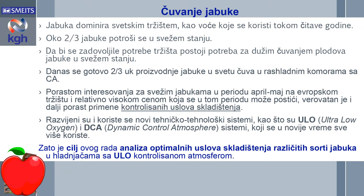U svetu, kontrolisana atmosfera najviše se koristi za čuvanje jabuka, i to je tema ovog rada. Jabuka dominira svetskim tržištem kao voće koje se koristi tokom čitave godine. Oko dve trećine jabuke potroši se u svežem stanju, samo jedna trećina ide u preradu. Ove dve trećine treba što duže čuvati u svežem stanju. Danas se gotovo dve trećine ukupne proizvodnje jabuke u svetu čuva u rasladnim komorama sa kontrolisanom atmosferom. Porastom interesovanja za svežim jabukama u periodu april-maja na evropskom tržištu i relativno visokom cenom, verovatan je i dalje porast primene kontrolisanih uslova skladištenja.